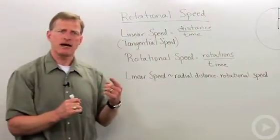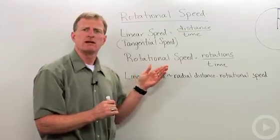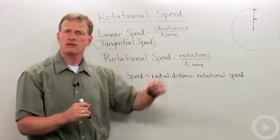The other speed an object has is rotational speed. Rotational speed is the number of rotations per time.